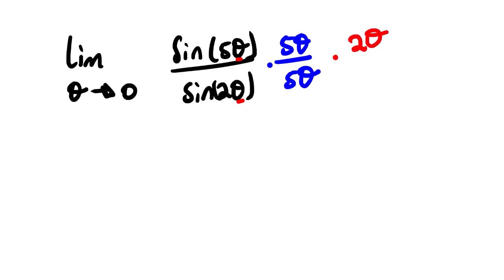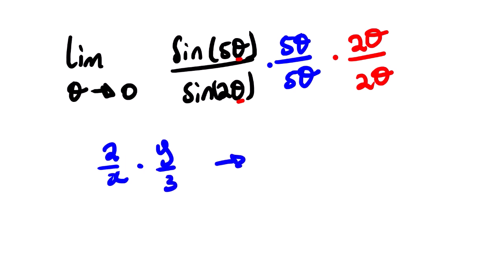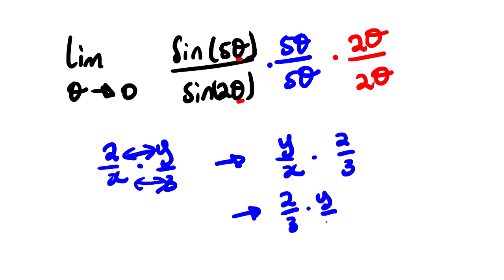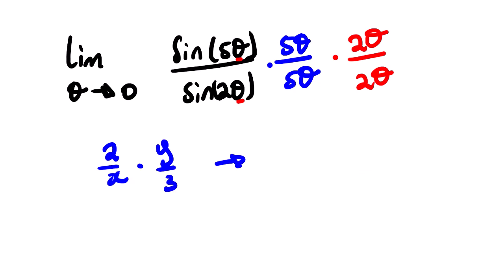For the next step, we need to understand the manipulation of fractions. For example, two over x multiplied by y over three is the same as y over x multiplied by two over three — we can swap terms as long as there is a multiplication sign between them. The order doesn't matter, so we are free to rearrange our expression.